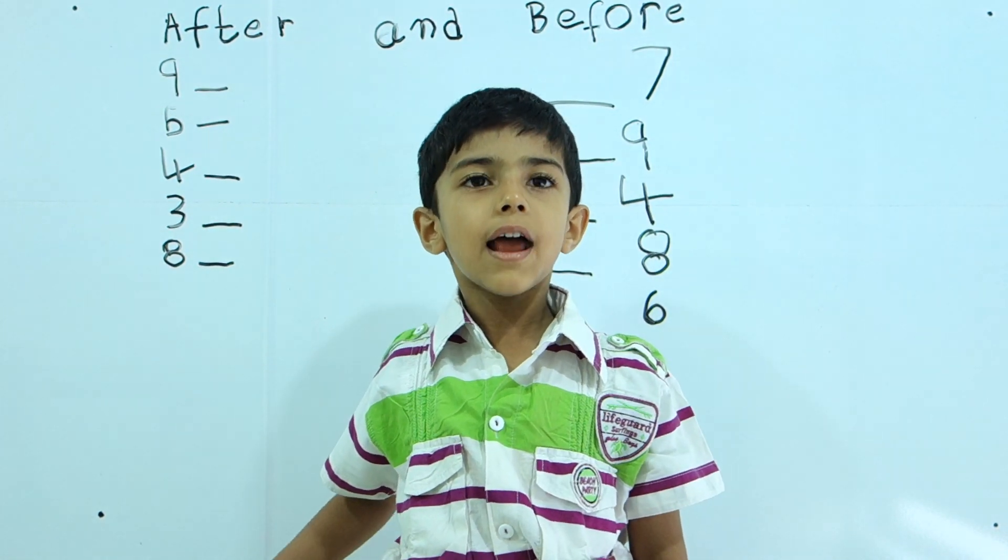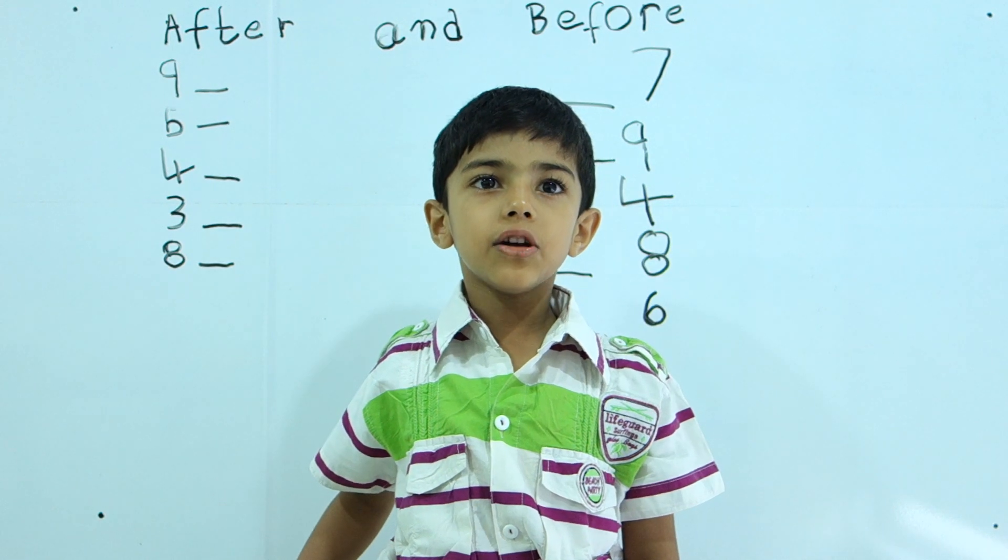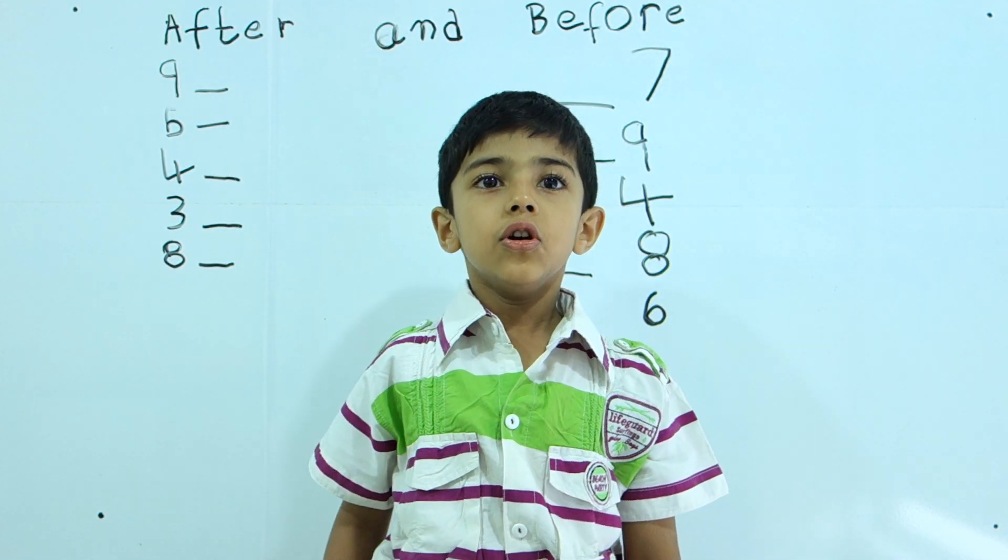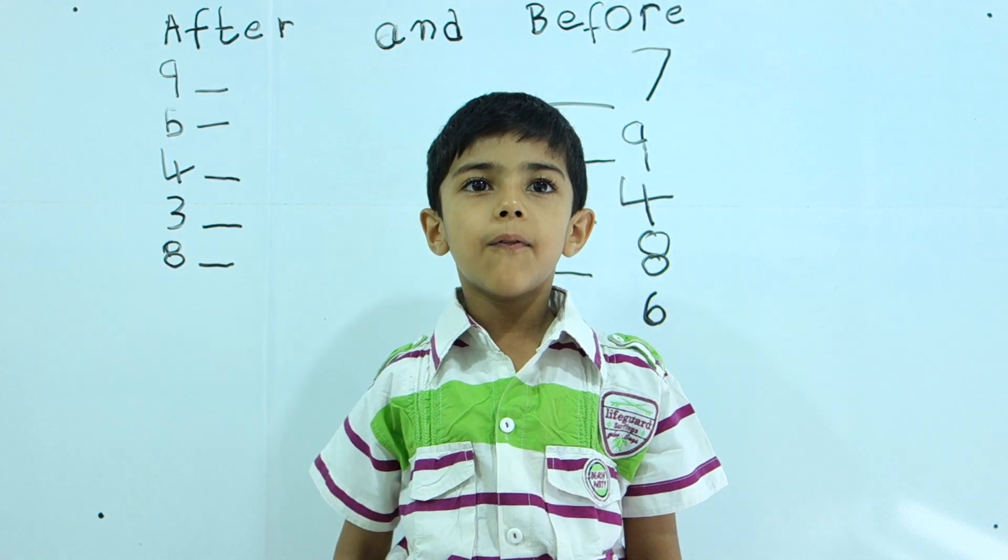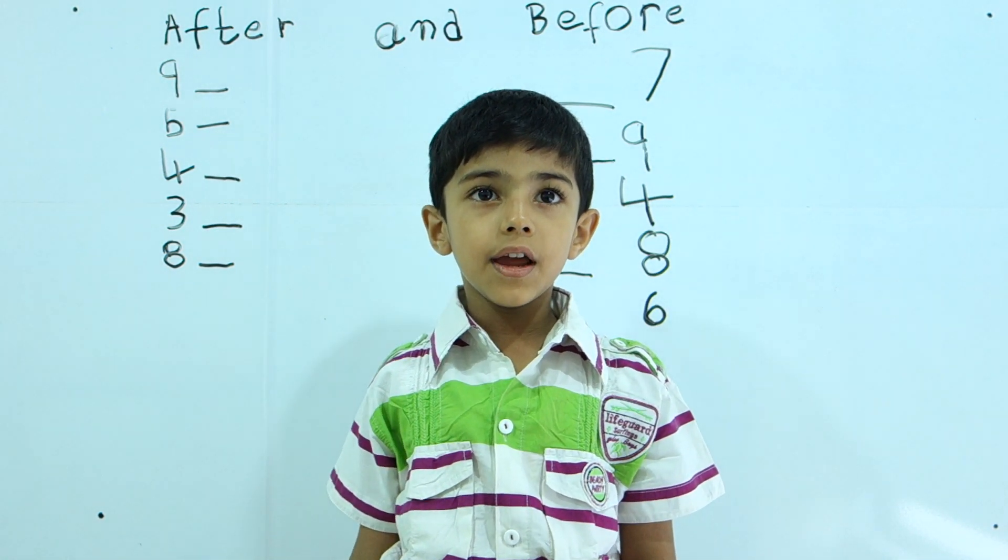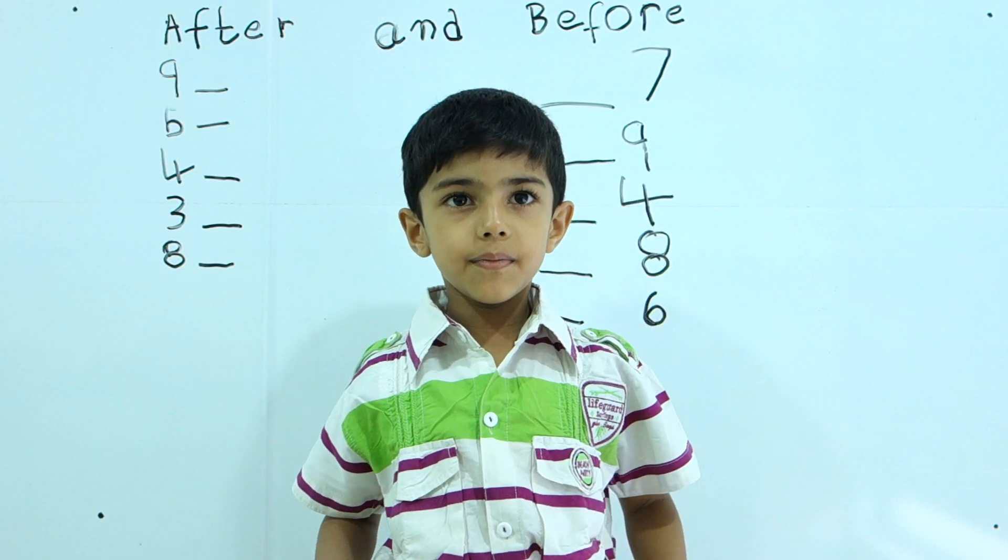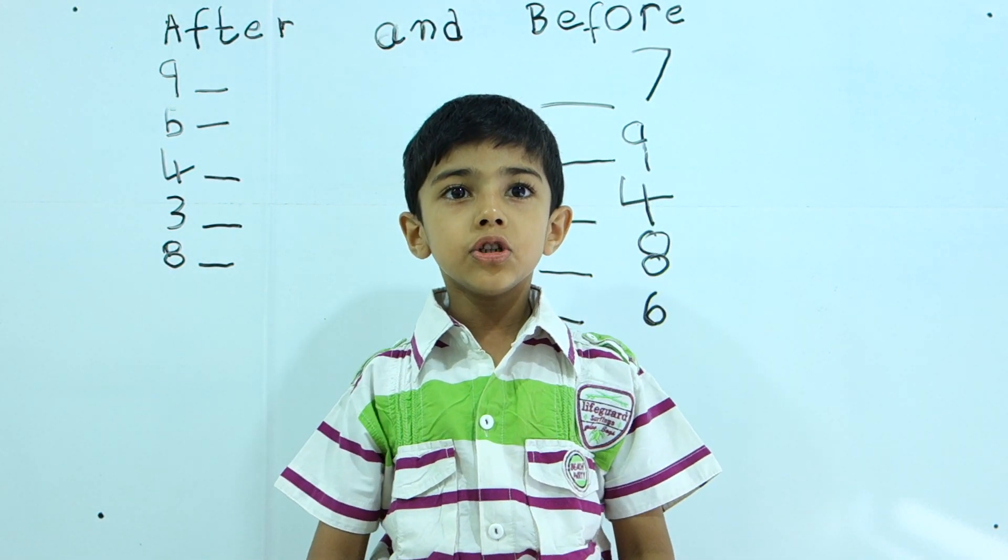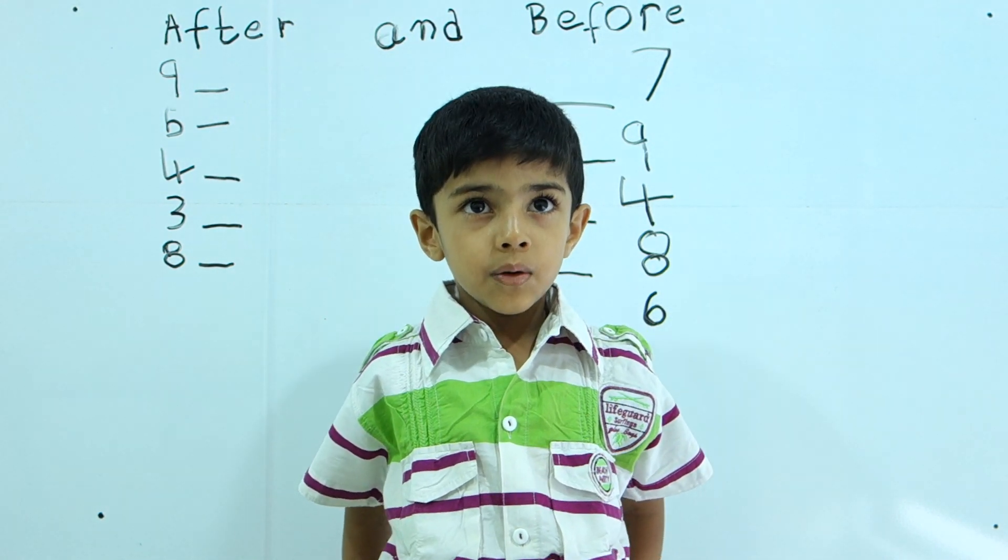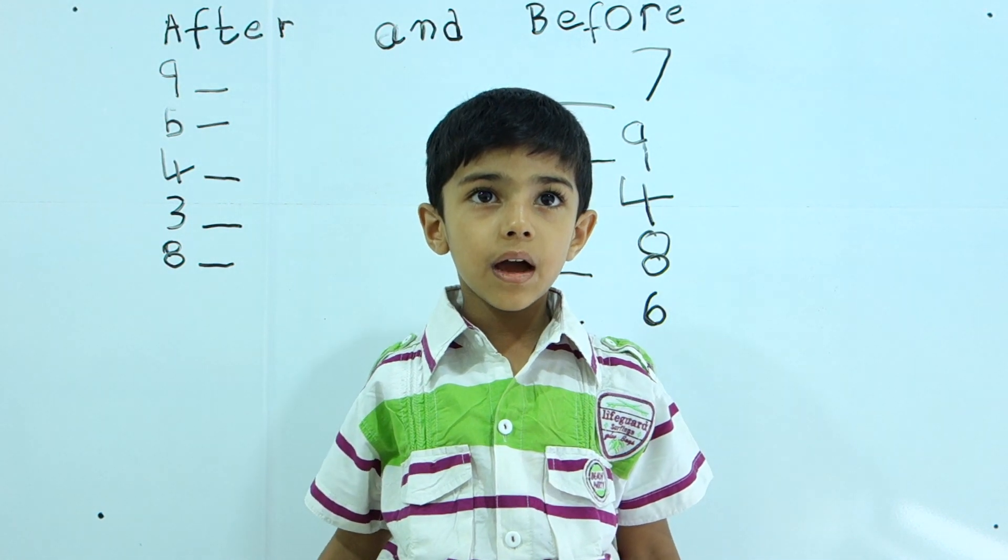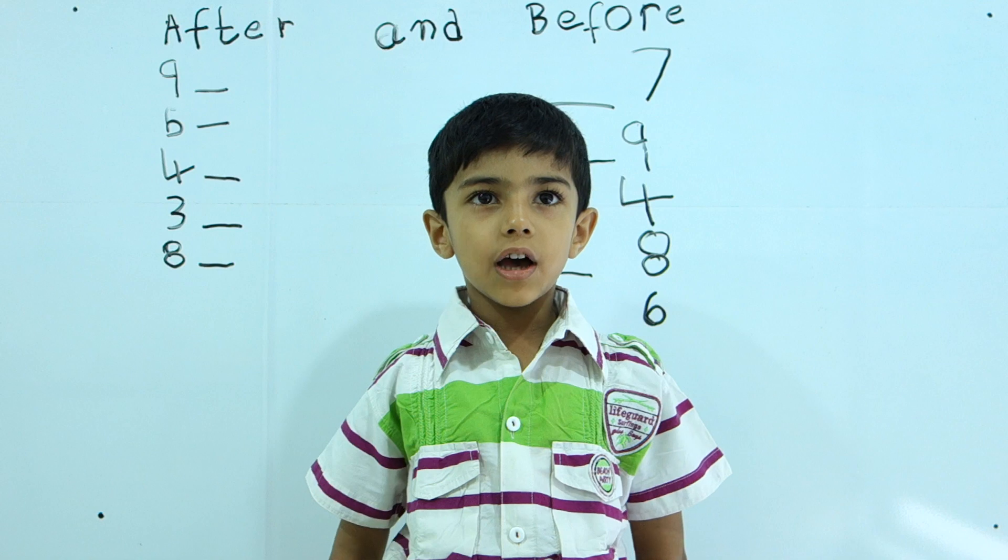Molly, let's do after numbers and before numbers. Let's start with after numbers and before numbers. Molly is in front of me. Shoya is behind me. So Molly is before me, Shoya is after me.